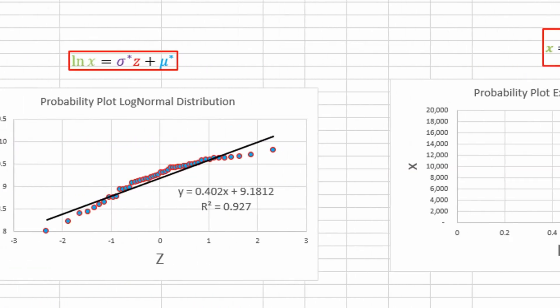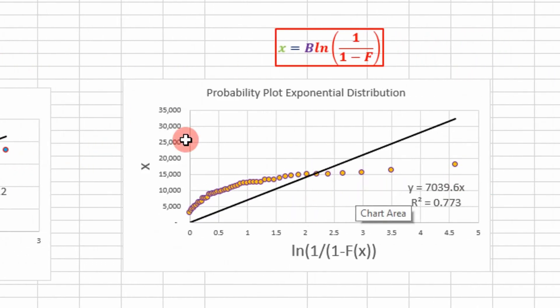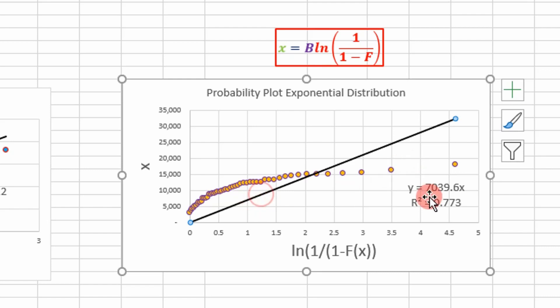If we plot that on this graph we end up with this result, and then we fit a straight line through the data because of this equation. And we forced our intercept to go through zero.